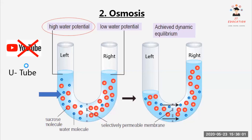Water moves from a region of high water potential to a region of low water potential through a selectively permeable membrane — this process is called osmosis. After that, the system will reach a dynamic equilibrium when the left and right sides are balanced.